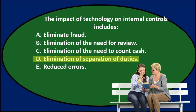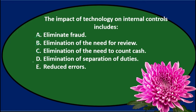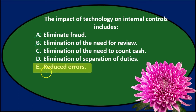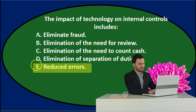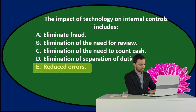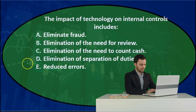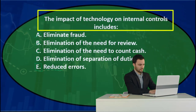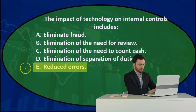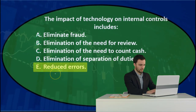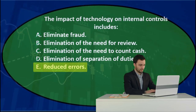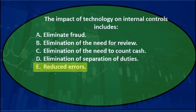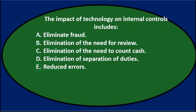D, elimination of separation of duties — we still want separation of duties even with technology. E, reduced errors — notice it says 'reduce,' not 'eliminate.' By process of elimination, it has to be E. Reduce errors seems reasonable. The impact of technology on internal controls includes reduced errors, especially errors like debits not equaling credits when entering data into a computerized system.